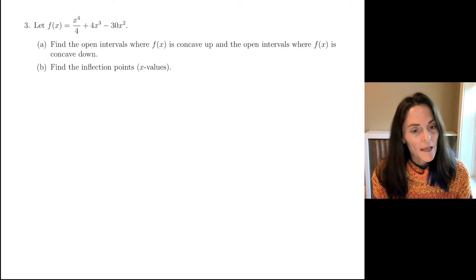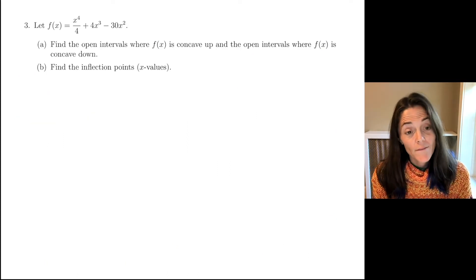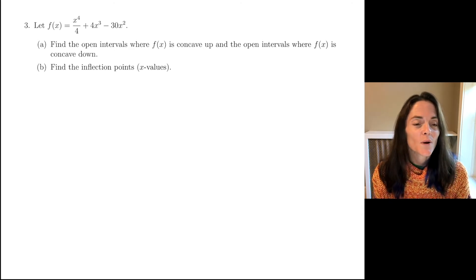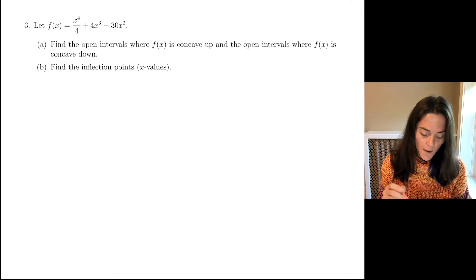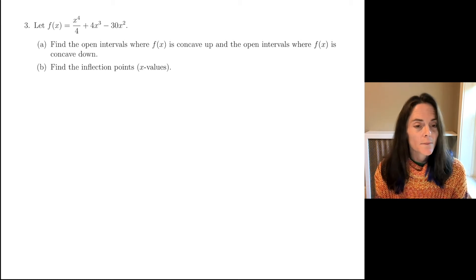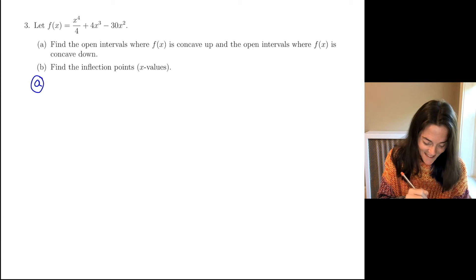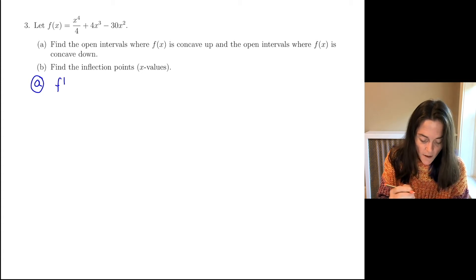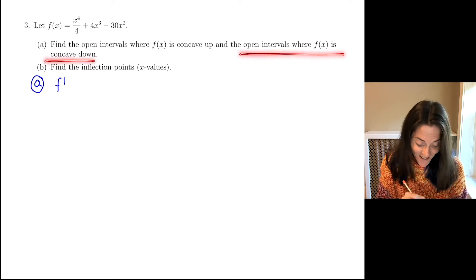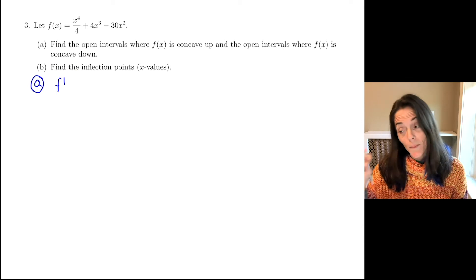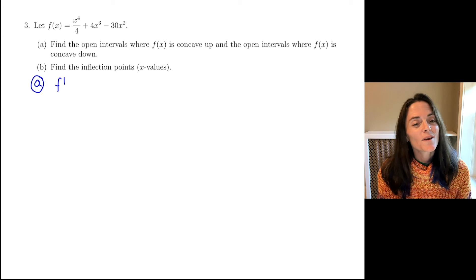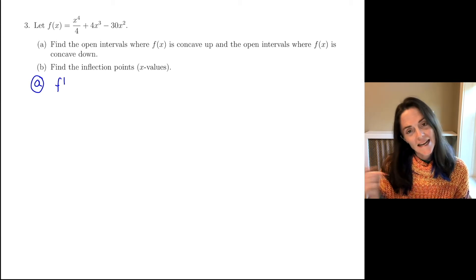Here's another example, number 3, where we list open intervals for concave up and down and inflection points. Unlike the last one, we're not given the derivative here, so we're going to be taking derivatives in order to get started on this problem. I'm not asked about increasing or decreasing, and not asked about local max and min — so it's a little different. To get started, I need places where the second derivative is 0 or does not exist. Those are potential inflection points, and it needs to be in the domain. This is a polynomial, so the domain is all real numbers, minus infinity to infinity.